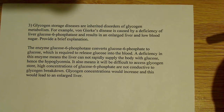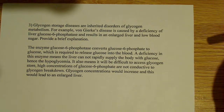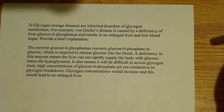Basically we have two factors working here: the inability to break down glycogen efficiently, which results in an enlarged liver, and the inability to produce glucose from glucose 6-phosphate in the gluconeogenesis pathway, which means we're not going to have as much glucose in the blood as we need, resulting in hypoglycemia. And that's basically how this question is answered.